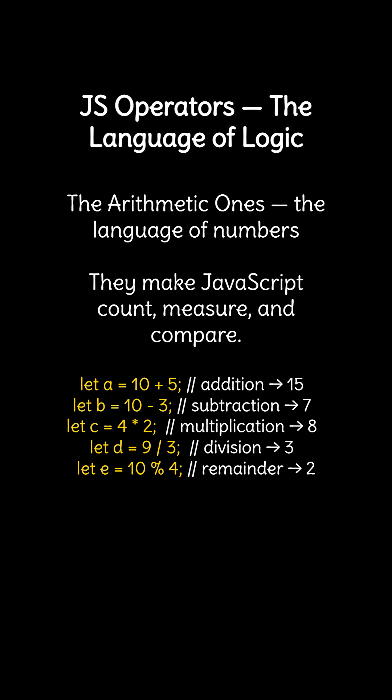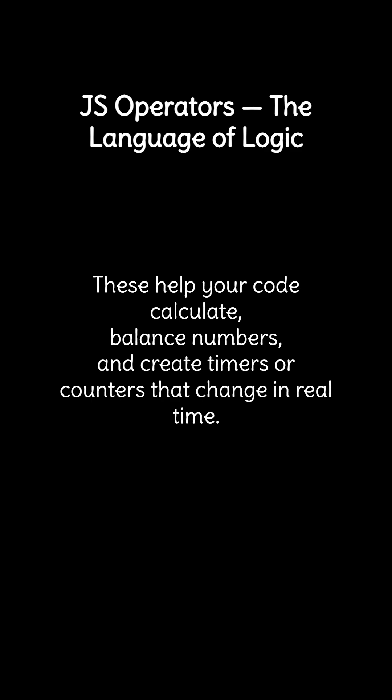Let D equal 9 divided by 3, result 3. Let A equal 10 modulo 4, remainder 2. These help your code calculate, balance numbers, and create timers or counters that change in real time.